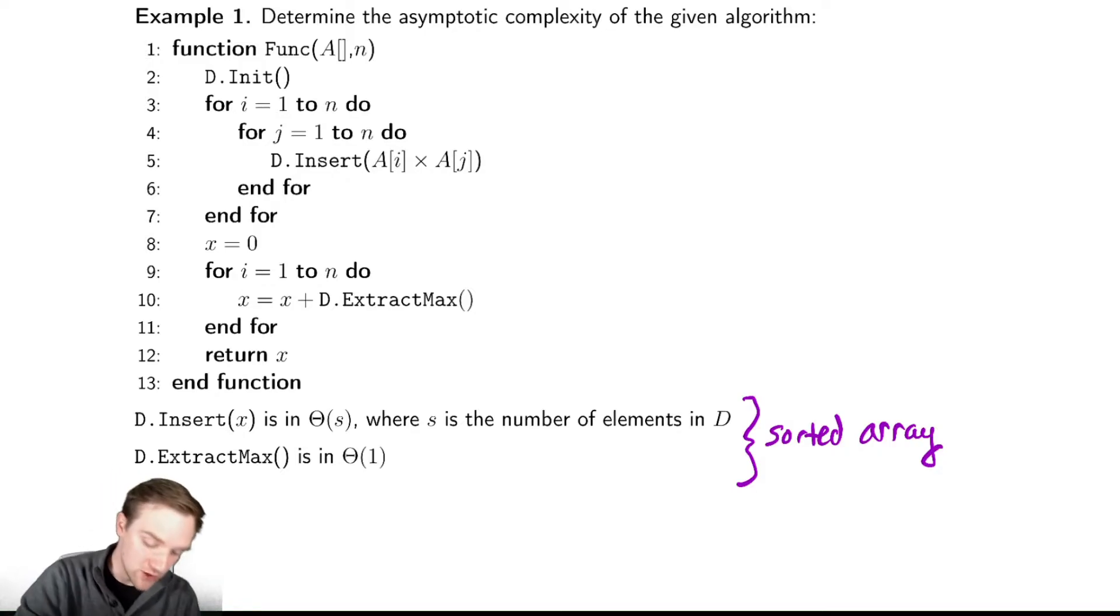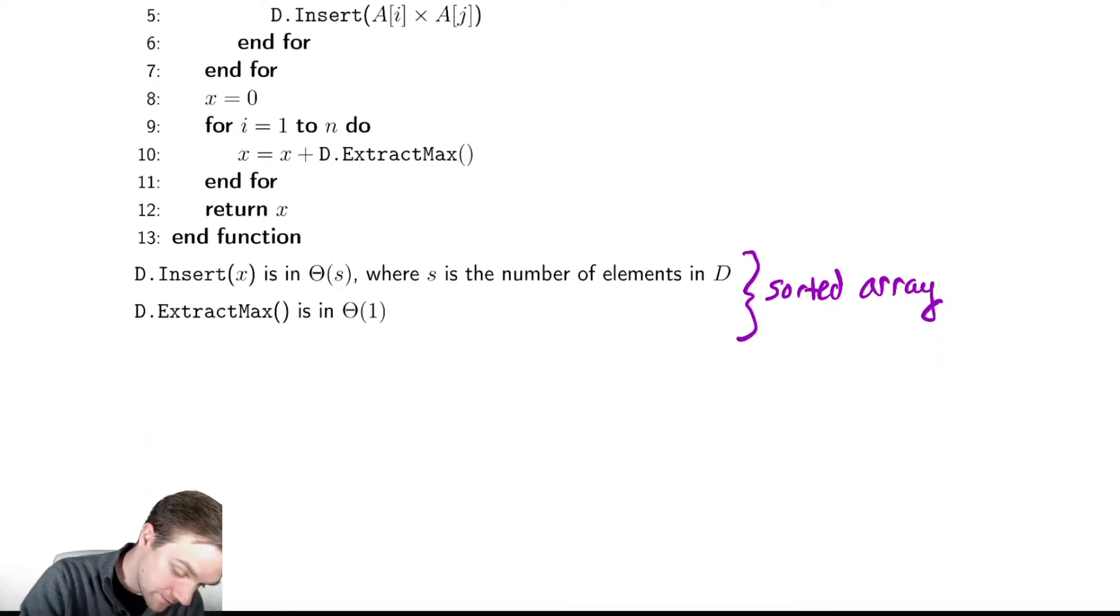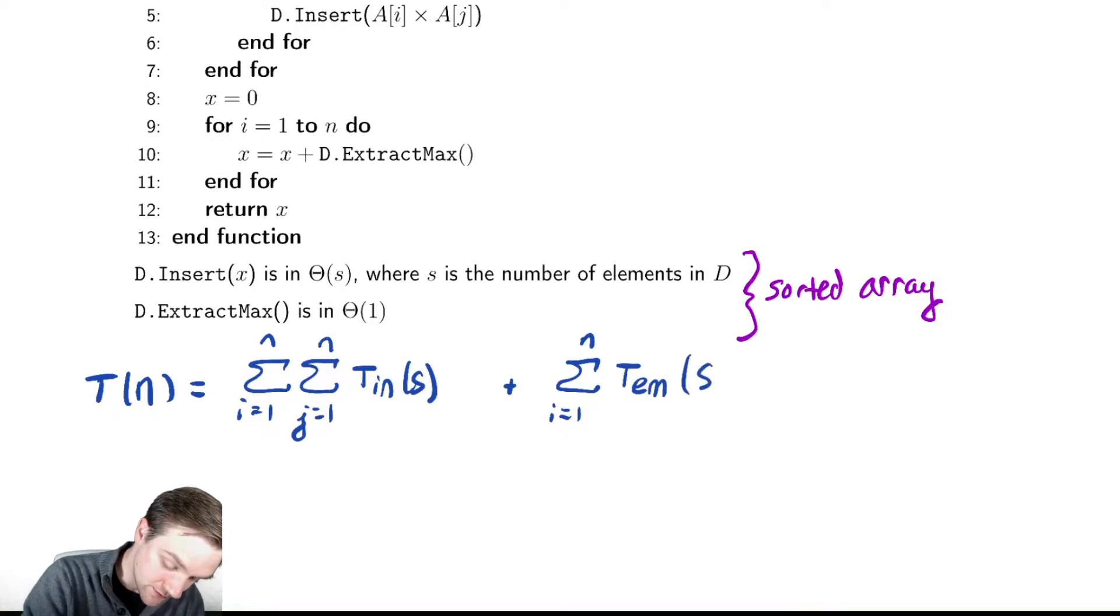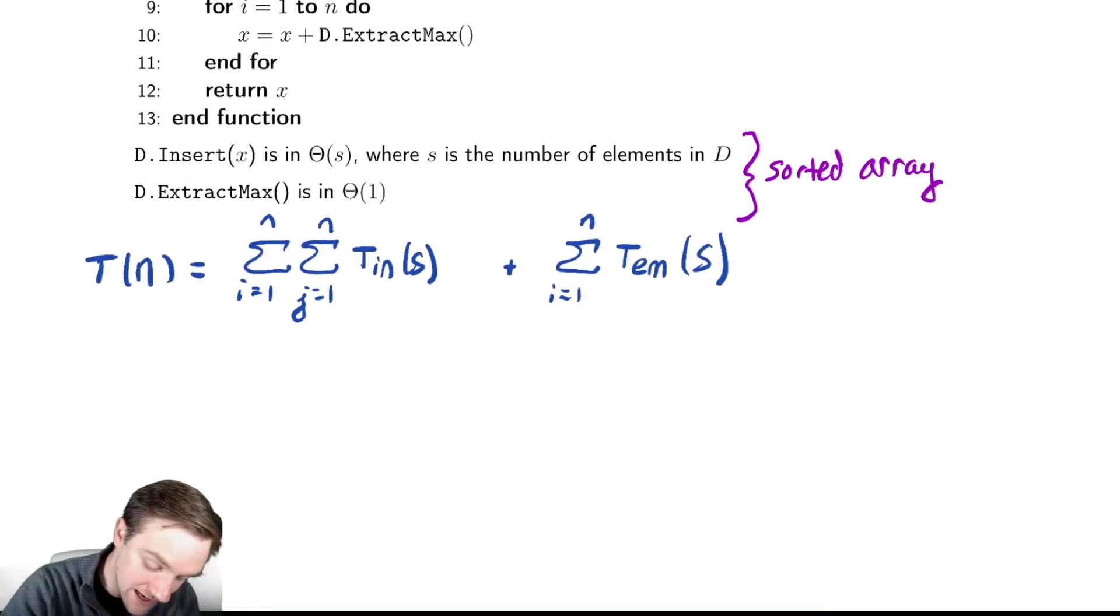So let's try and analyze this. I'm going to do exactly like I did before, where we have T(n) is equal to the sum from i equals 1 to n, the sum from j equals 1 to n of the time it takes to insert as a function of the size, plus the time to extract the maximum element as a function of the size. And now that first summation looks a little awkward. Let's try and figure out what the size is going to be as a function of i and j.